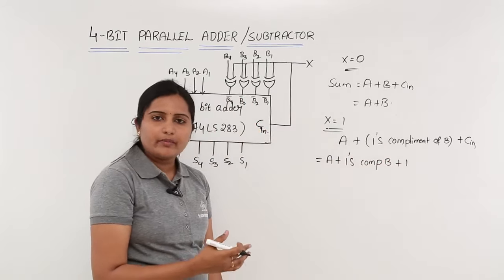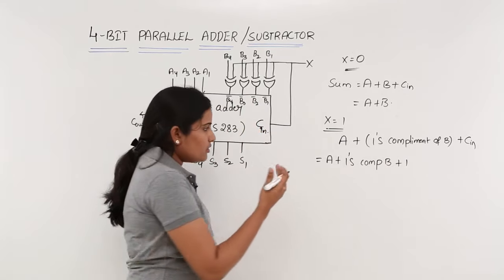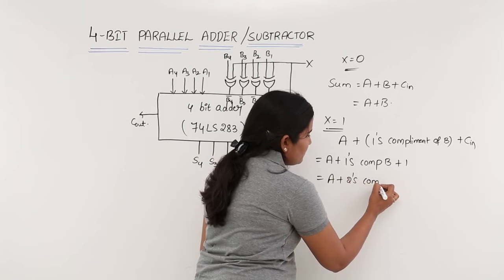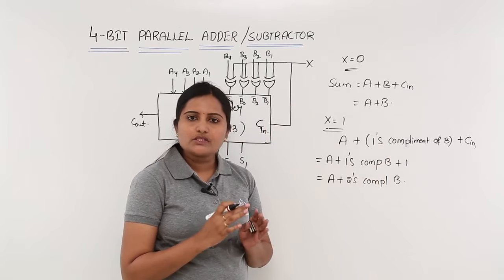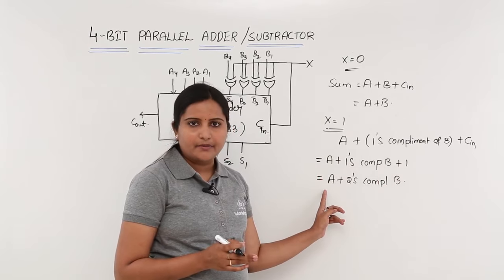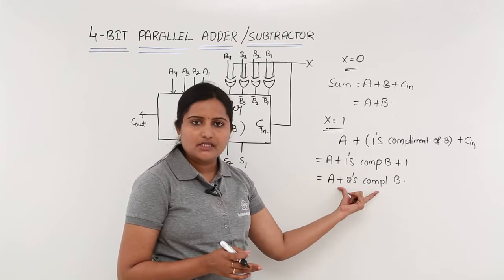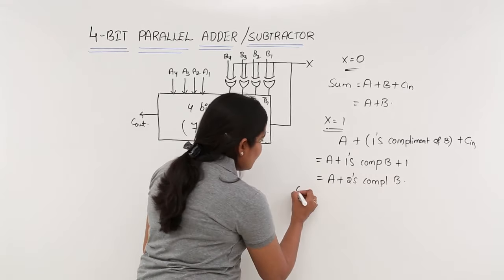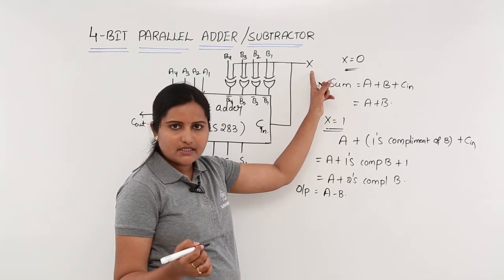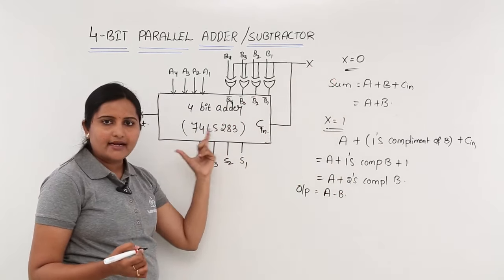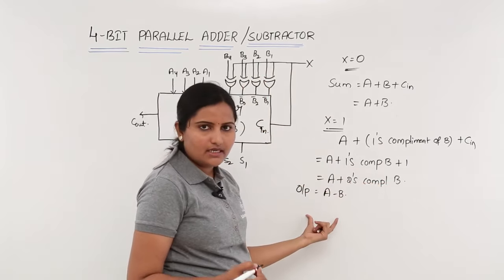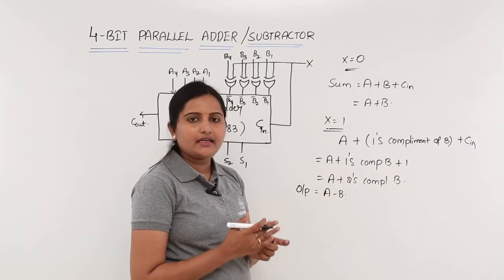When you add 1 to the ones' complement you get the 2's complement. So the result is A plus the 2's complement of B. In 2's complement subtraction, taking the 2's complement of the subtrahend and adding it to the minuend gives A minus B. So the output is A minus B. By making X equal to 0 the circuit acts as an adder, and when X equal to 1 it acts as a subtractor.